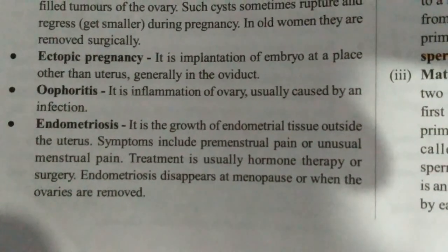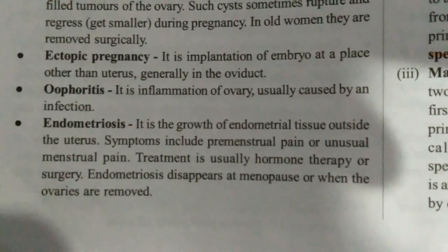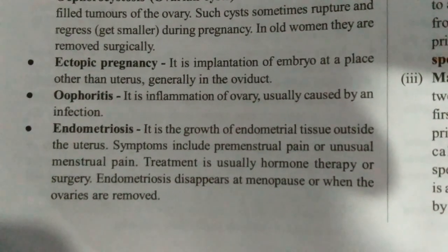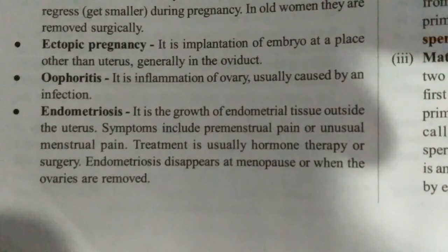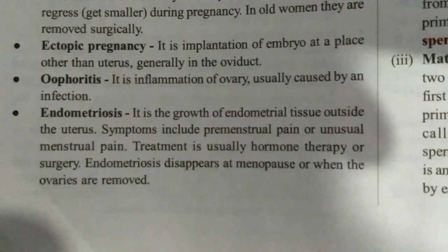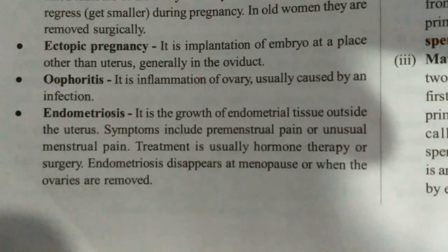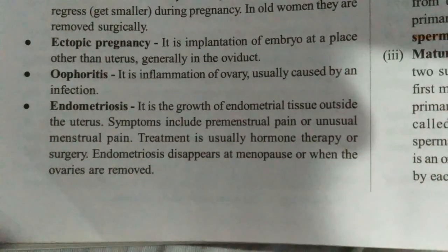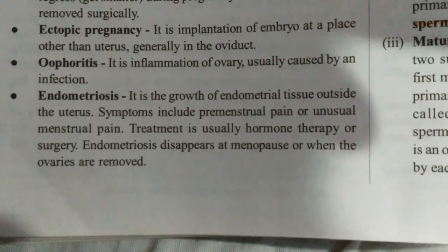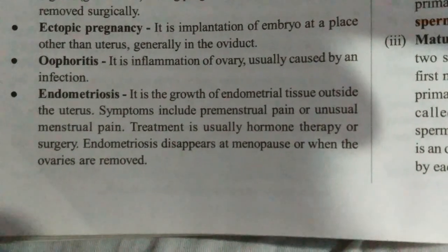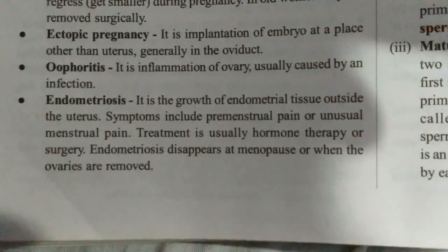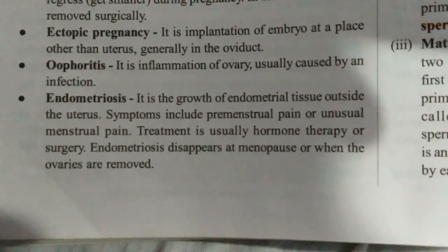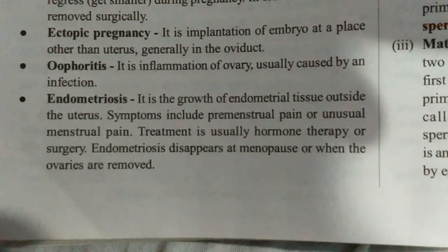If inflammation of the ovary occurs, usually caused by infection, it is known as oophoritis. Then there is endometriosis — it is the growth of endometrial tissue outside the uterus. Normally the endometrium grows inside the uterus, but if it grows outside, for example in the fallopian tubes or elsewhere, this is known as endometriosis.